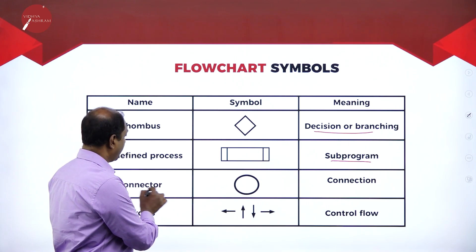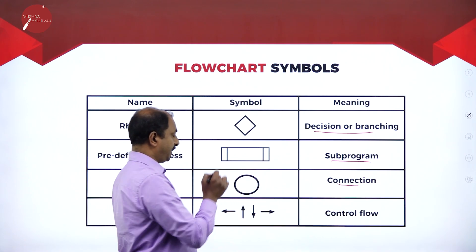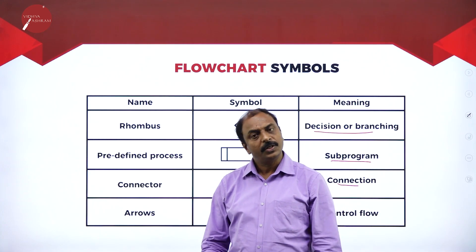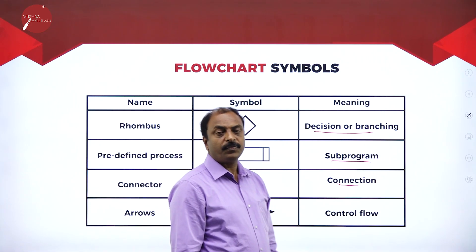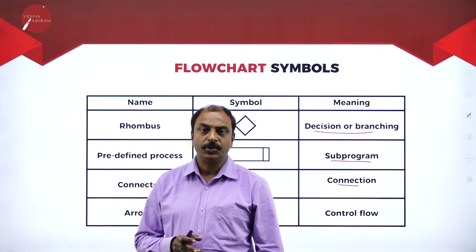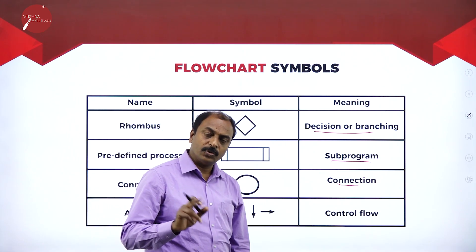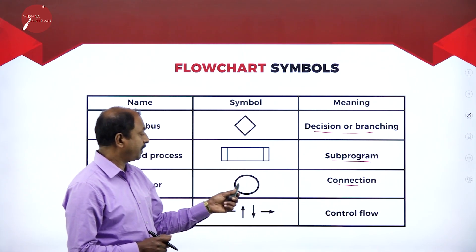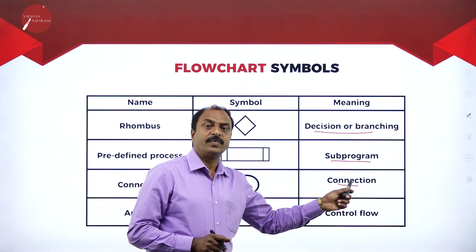There is also a predefined process symbol used for subprograms. Next is the connector — a circle — used to connect flowcharts written on different pages or locations. For example, if our flowchart doesn't fit on one page and we need to continue on another page, we use connectors — circles — to connect the two parts of the flowchart.